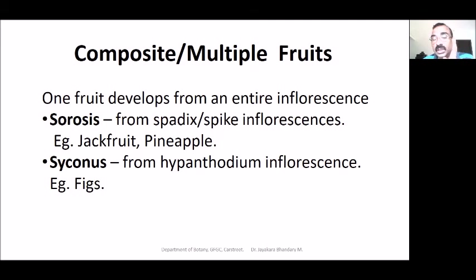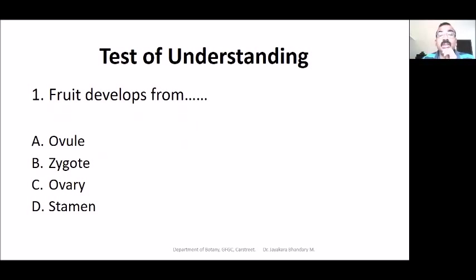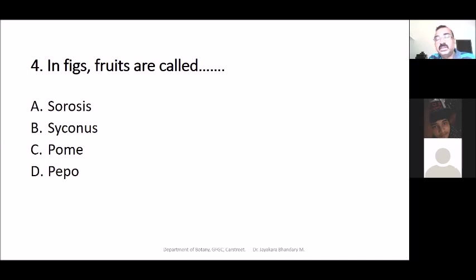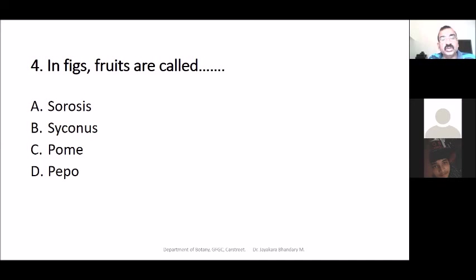Now, are the different types clear? Let's answer some questions: which part of the flower develops into fruit? The ovary develops into fruit. What type of fruit is a syconus — simple, aggregate, or composite? Composite. So I think you have a basic idea of what fruits are, the different types, and examples for each type.